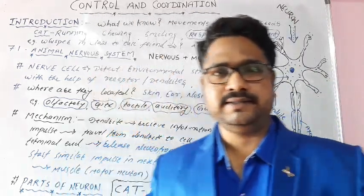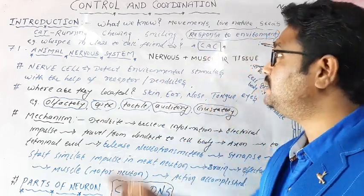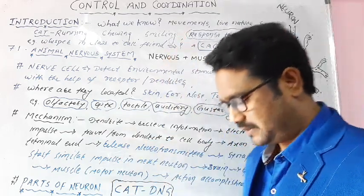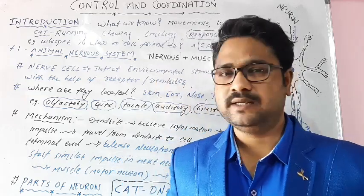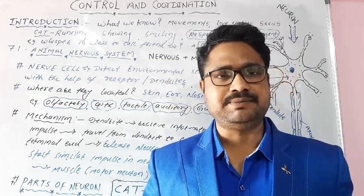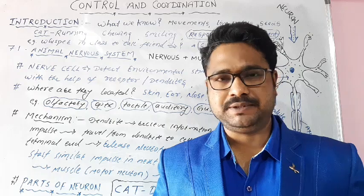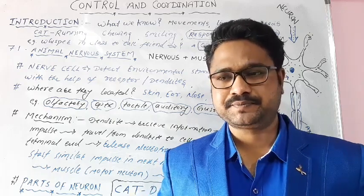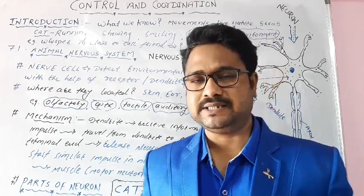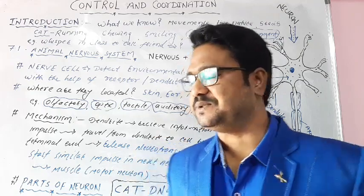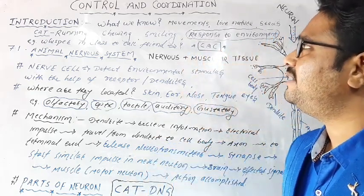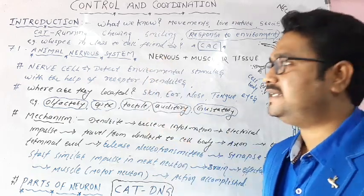Let us start this chapter on control and coordination. As we've seen in life processes how different maintenance processes occur, but to have a balanced life, an individual's life has to be properly controlled and internally coordinated. That is what we're going to understand in this chapter - control and coordination.